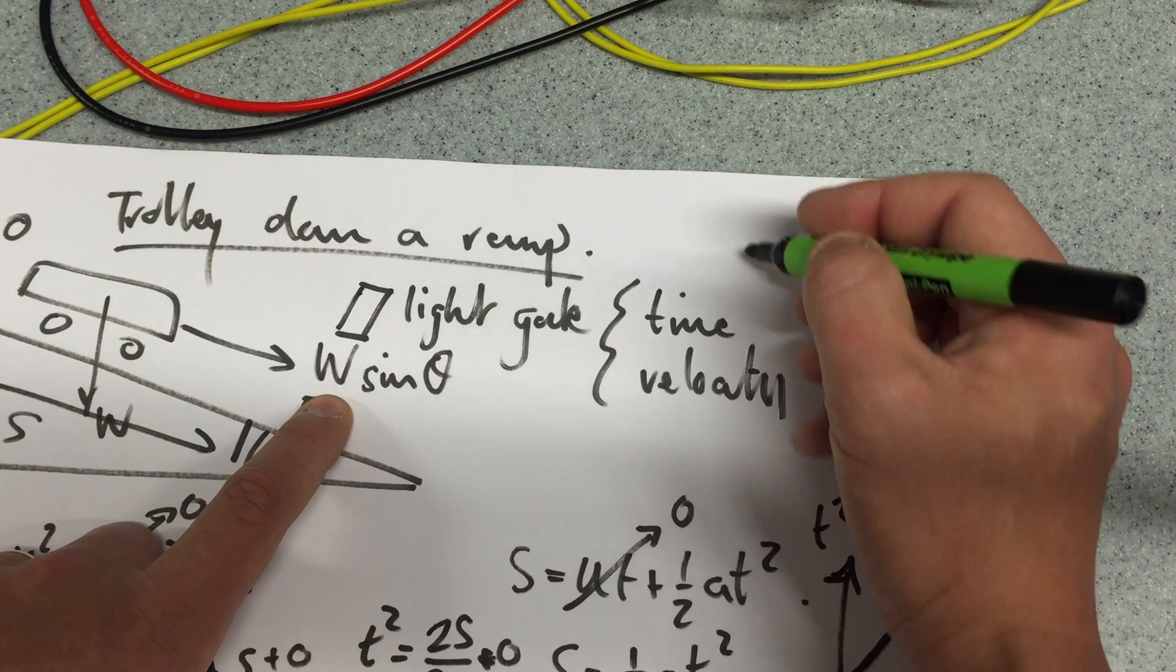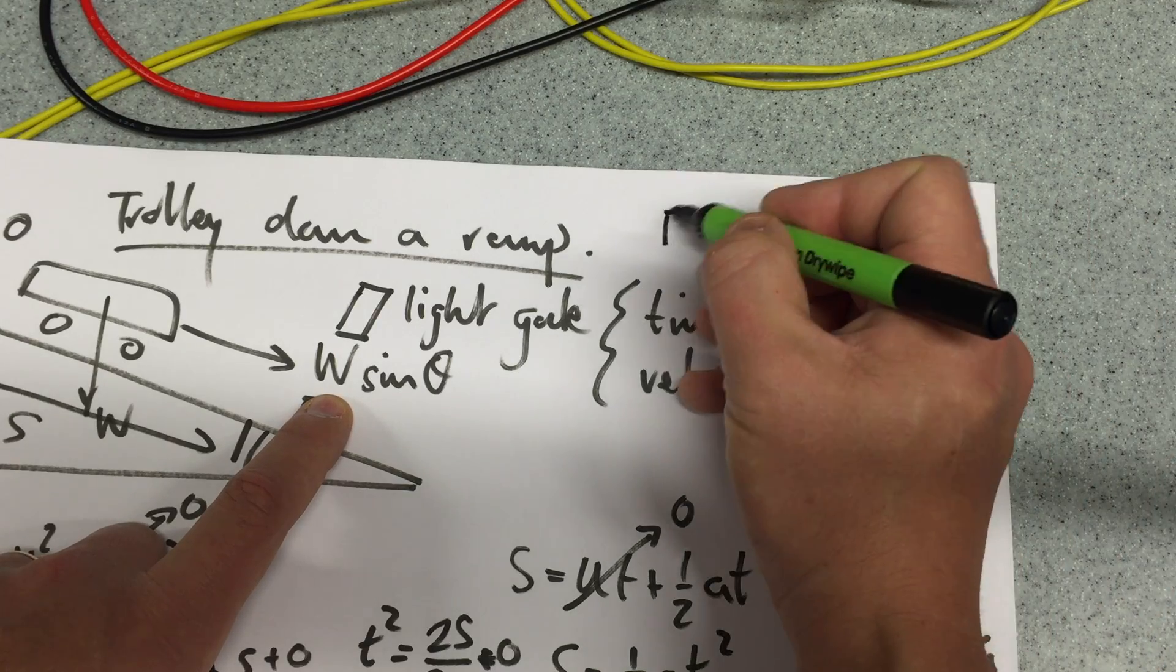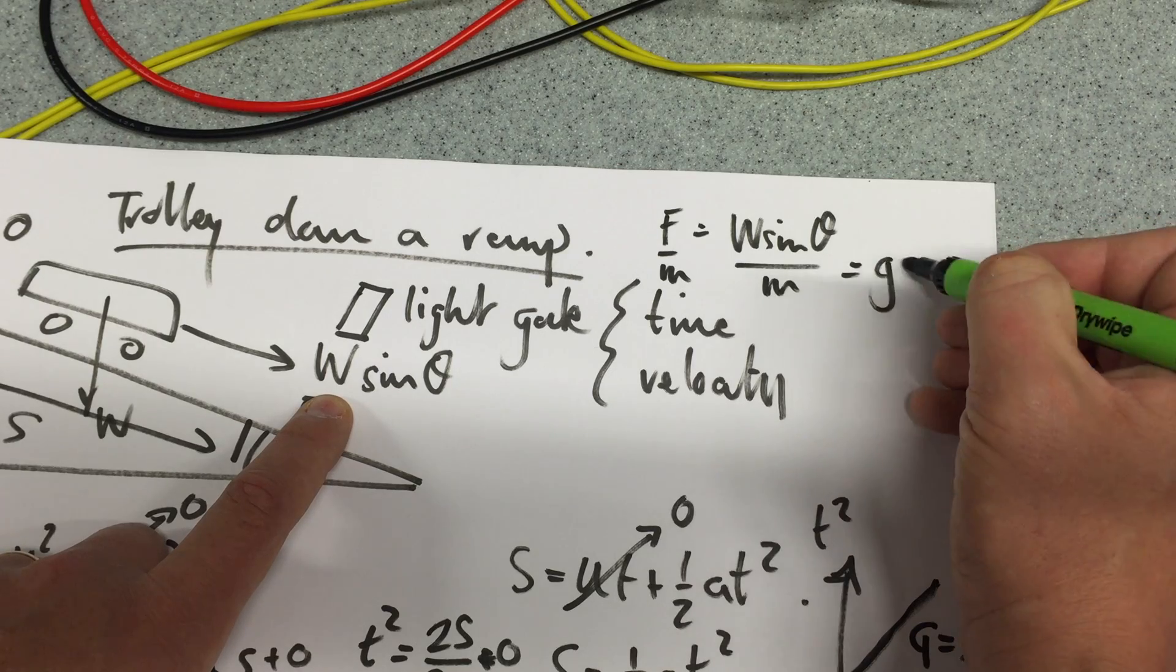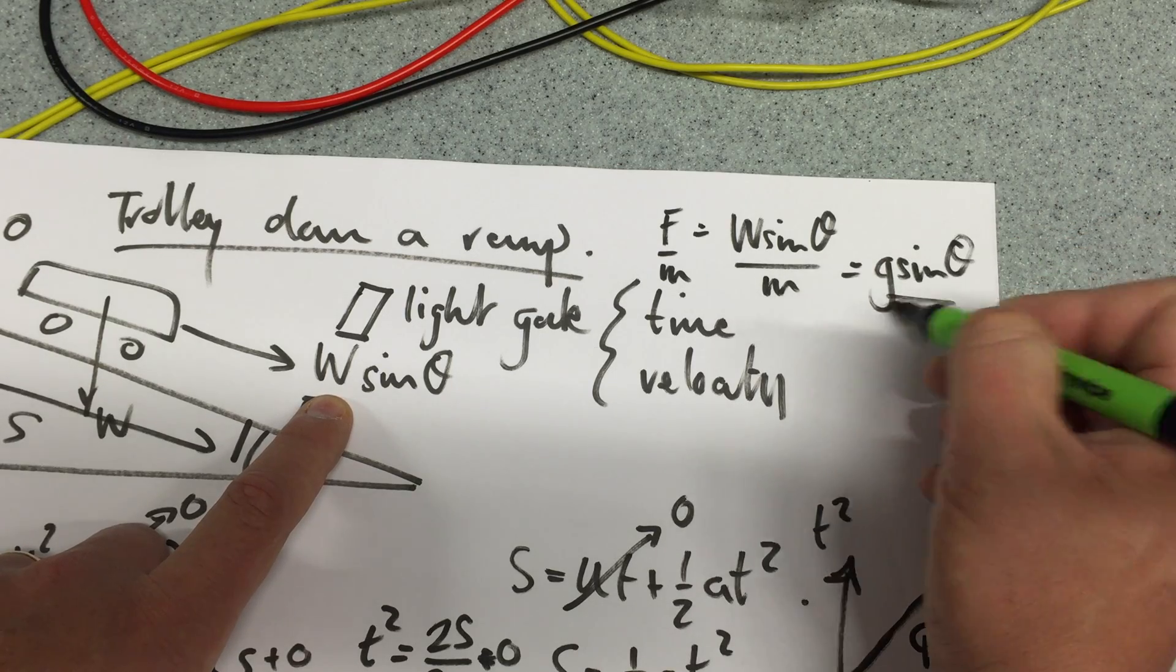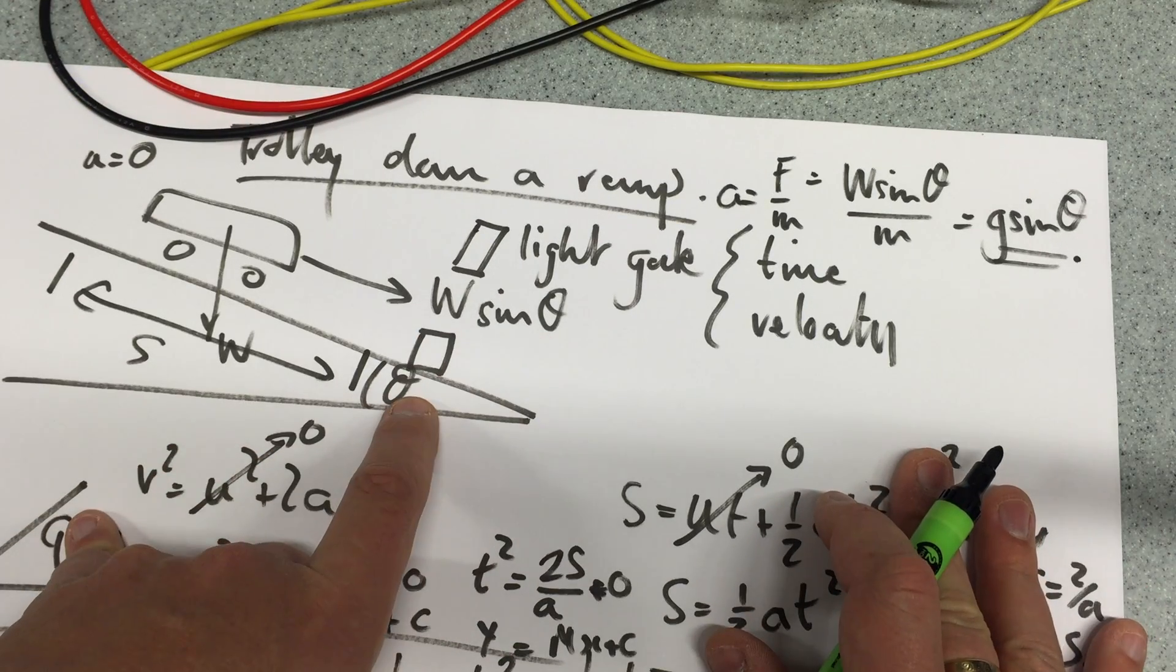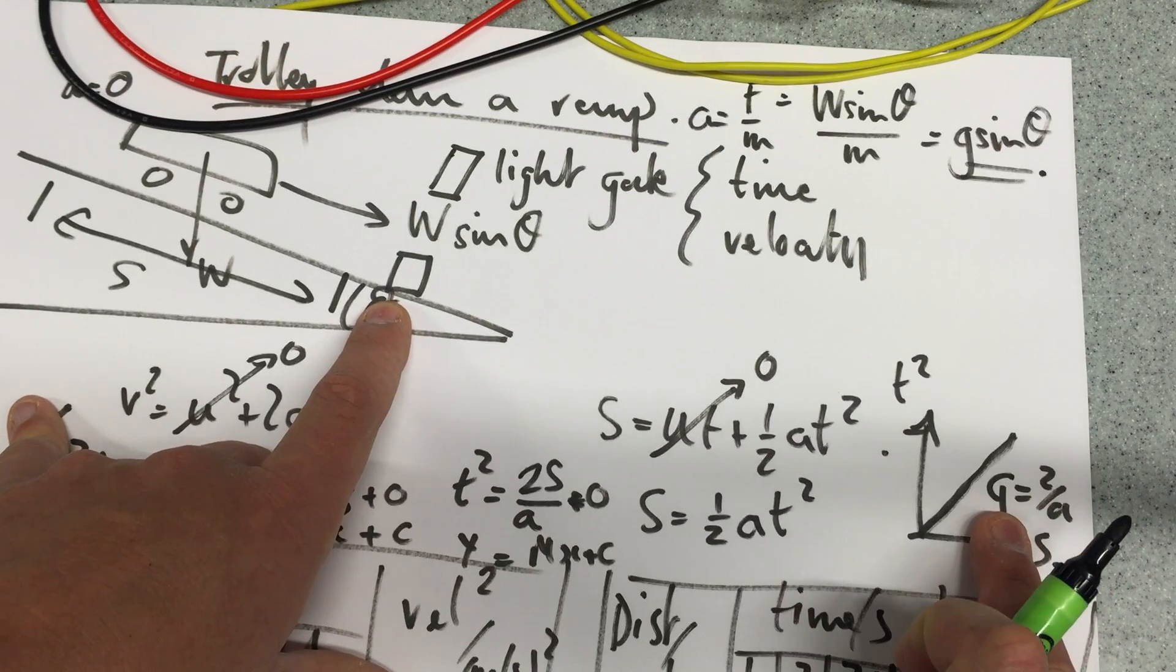Because we know that the pulling it down is w sine theta, then that's the force. So therefore, the acceleration is divided by m, which makes it g sine theta is the acceleration. So it might be worth working out what the angle theta is. So when you get it, you can work out what the acceleration is and see whether that correlates to this.